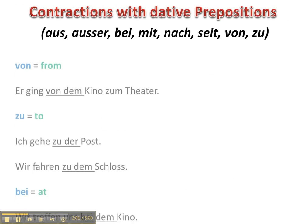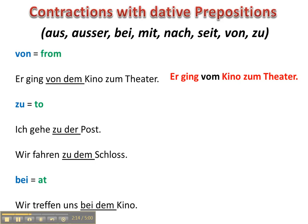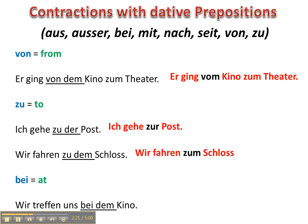So, dative prepositions. Not all prepositions can form contractions. Von: Er ging von dem Kino zum Theater → Er ging vom Kino zum Theater. Zu: Ich gehe zu der Post → Ich gehe zur Post. Wir fahren zu dem Schloss → Wir fahren zum Schloss. Bei: Wir treffen uns bei dem Kino → Wir treffen uns beim Kino.